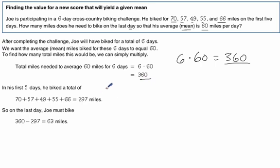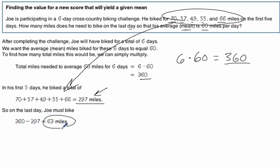How much has he ridden so far? Well, we add all of his miles up, we get 297, do our little subtraction, and we get 63 miles. So on his last day, he's got to ride 63 miles, which is doable. He's ridden close to that each time. So that's not too bad.